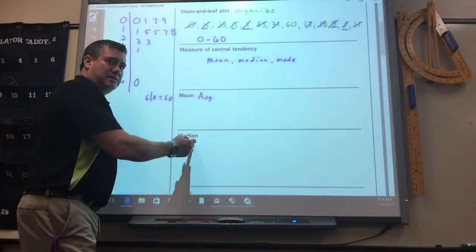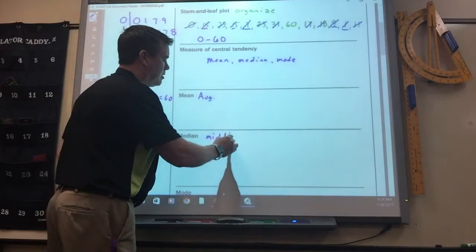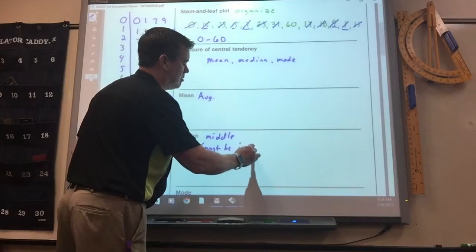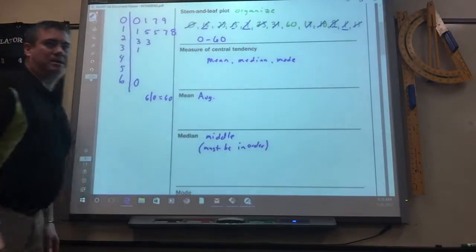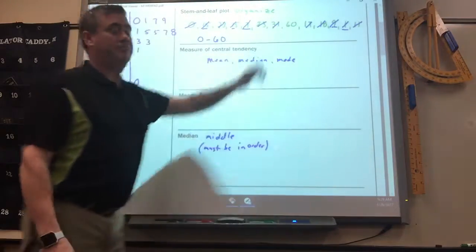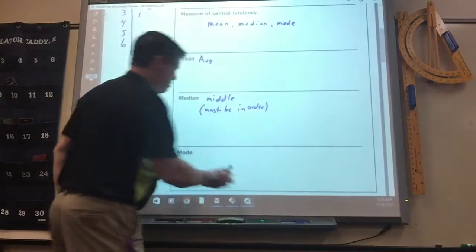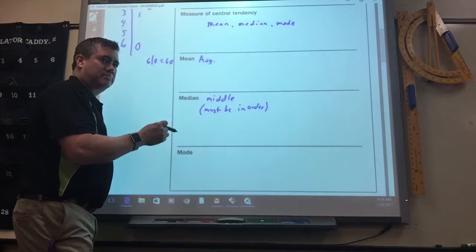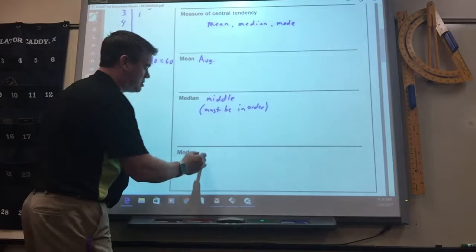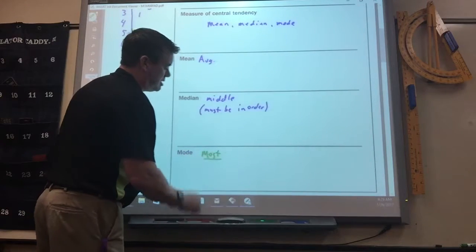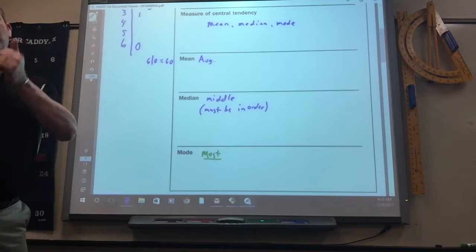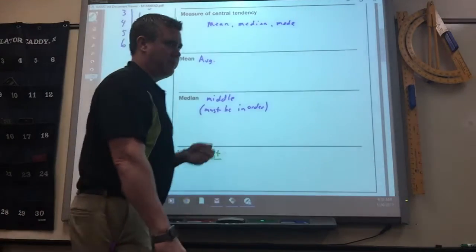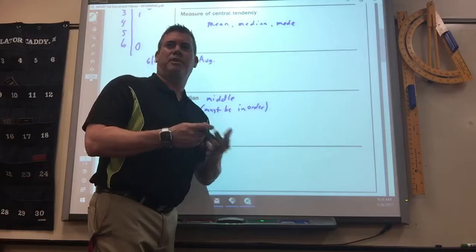The median is middle number. But you got to remember, they must be in order. You got to put them in order to find the median. You can't just look at the list here and then find the middle. And then the mode. Whatever appears most is the mode. You can have more than one mode, and you can have no mode. If they all appear only one time, then there's no mode. If there's like three numbers that each appear twice, then all three of those are the mode.